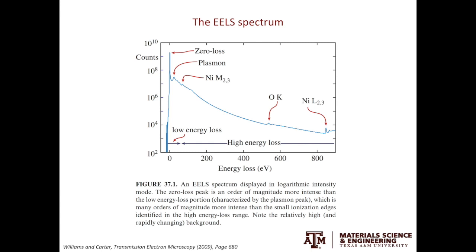This slide shows a good example of what you can get from the EELS spectrum. Note the y-axis is in log scale. There are some signatures you need to know. The first is the zero loss peak, caused by the elastically scattered electrons with no loss in energy. The second is the plasmon peak, caused by the collective oscillation of the lattice. The third are the characteristic peaks — in this example, they are nickel and oxygen edges. According to the amount of energy loss, we can divide the spectrum into two regions: the low energy loss region, or low loss region, and the high energy loss region, or core loss region. The division is rather arbitrary — the dividing line is 50 eV.